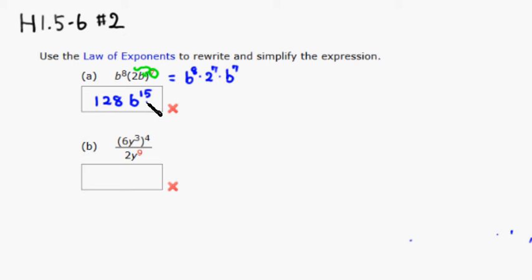How about part b? Same thing. We need to distribute this 4th power to 6 and y cubed. So this is going to be 6 to the 4th power times y cubed to the 4th power, which would be 3 times 4, so y to the 12th power.